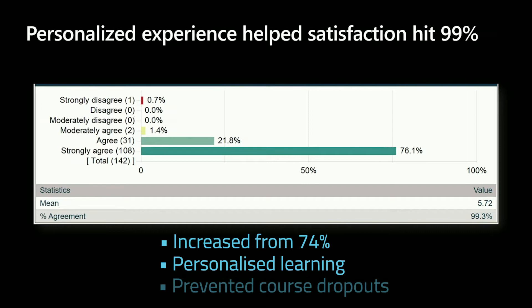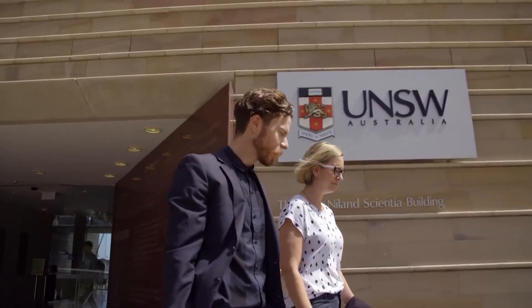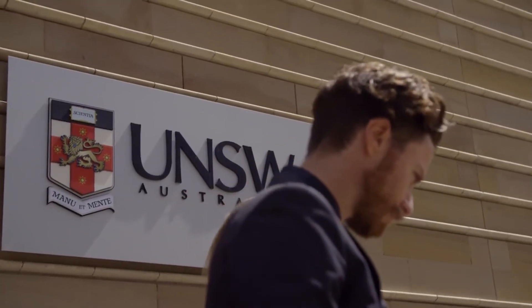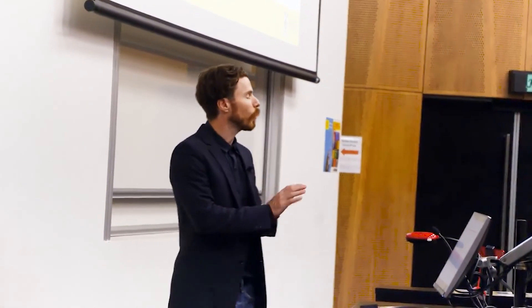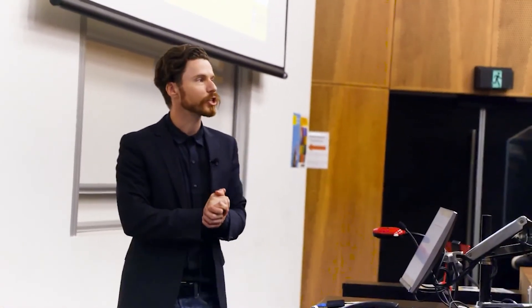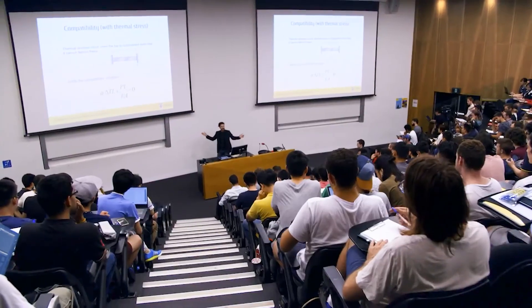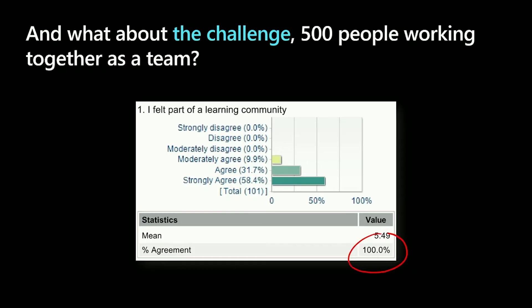We're actually able to identify at-risk students by week four of the course. I reach out personally to every one of those at-risk students and say, 'Hey, how can I help?' And what about that challenge — 500 students working together as a team? Well, I asked them: do you feel part of a learning community? 100% said yes. Whenever I'm stuck on a question, I know that there is always an answer to be found on Teams.